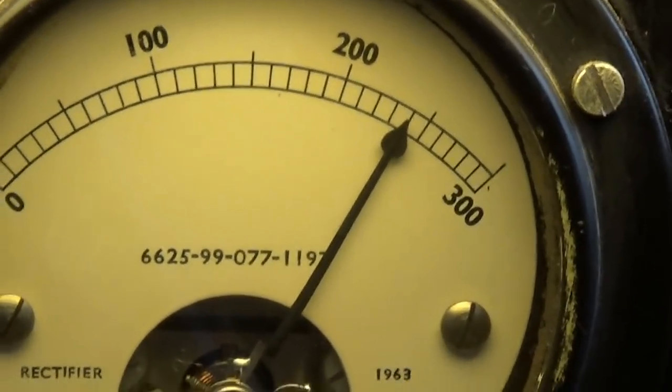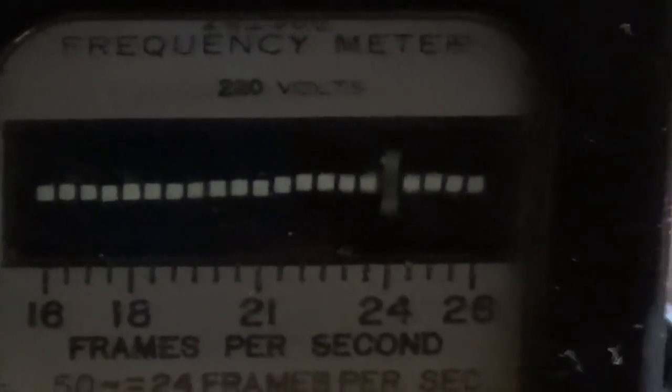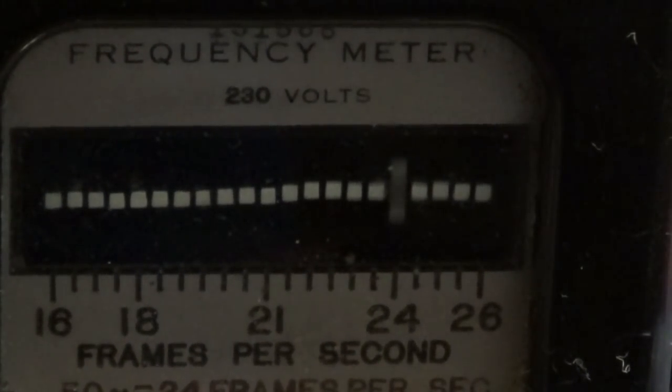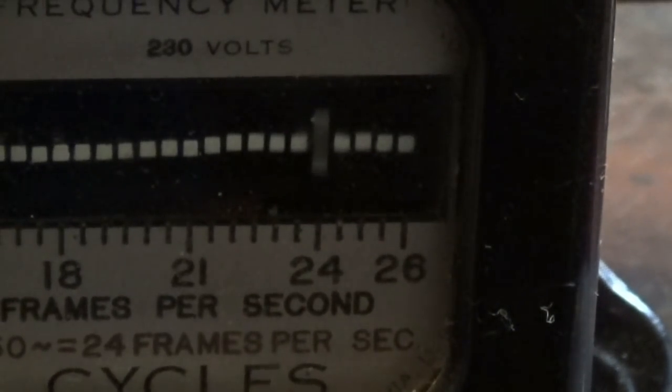And the frequency in this country, it's 60 in America, but it's 50 in this country. Now this frequency meter, I've mentioned this before, it came off a standby power supply for a cinema that was £1,000 brand new in the 60s, and I got it quite cheaply, obviously. But that meter alone is worth about £80.